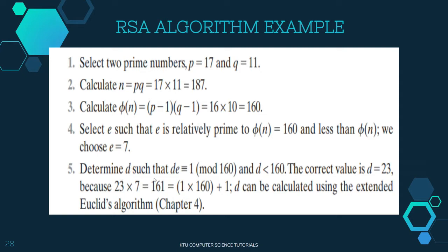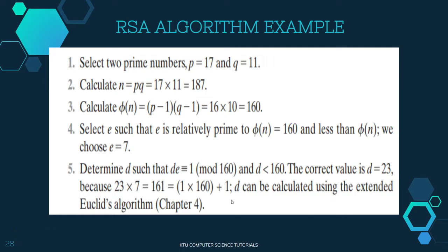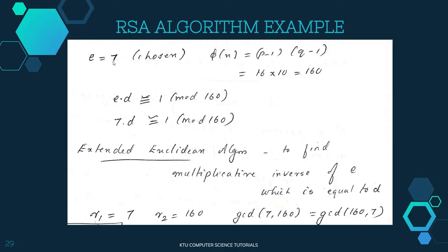The next step is to calculate the value of d using the relation: d into e is congruent to 1 mod 160. We have e equal to 7 and φ(n) equal to 160, so 7d is congruent to 1 mod 160. We need to find the multiplicative inverse of e mod 160. We use the extended Euclidean algorithm for this.